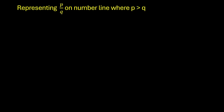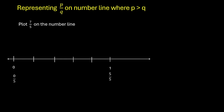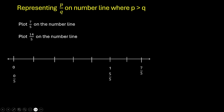Next is when we want to represent a rational number on the number line where the numerator is greater than the denominator. Here the approach is slightly different. Let us start with an example: 7 by 5. We just saw a number line where 1 can be written as 5 by 5, so if I just mark another point, this will be 6 by 5 and this will be 7 by 5. But what if I want to plot a very big number like 14 by 5 or 123 by 5? We cannot keep going like this — we need a more efficient way.